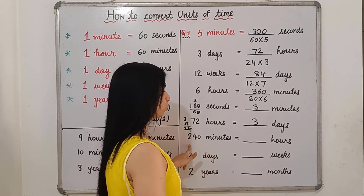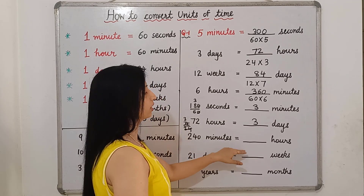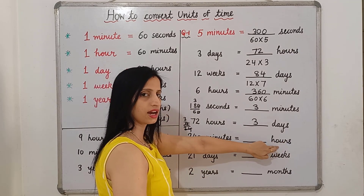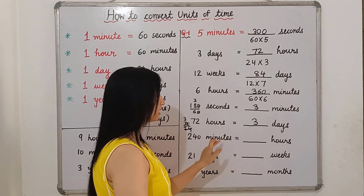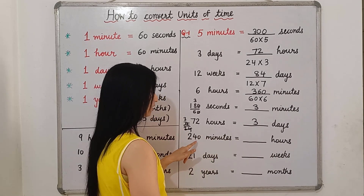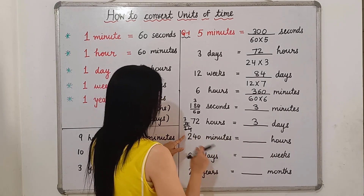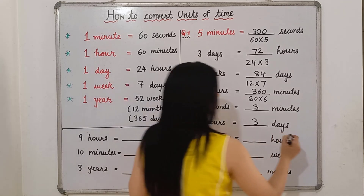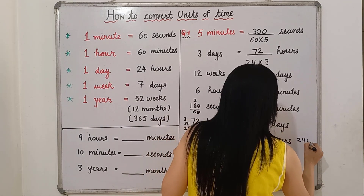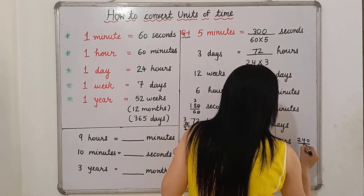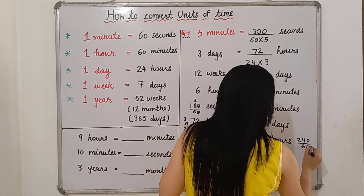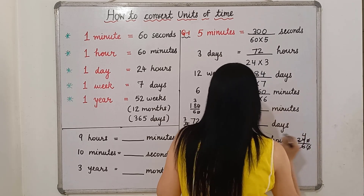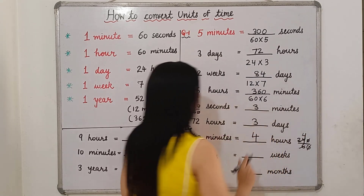240 minutes is equal to how many hours? In 1 hour there are 60 minutes, so we will divide by 60. 240 divided by 60 — the zeros cancel, and we will get 4. So the answer is 4 hours.